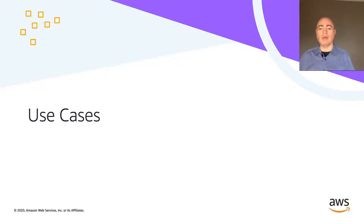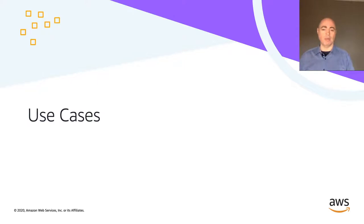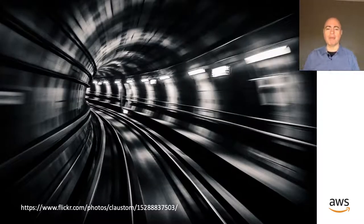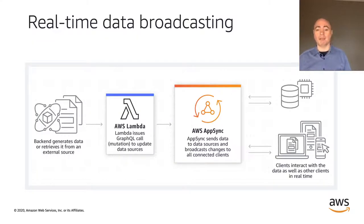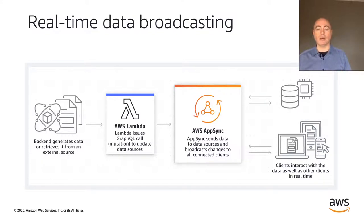Let's talk about use cases and how customers are powering their applications using AppSync at scale in production. Starting with one of my favorite use cases: real-time. Real-time technologies enable users to receive information as it happens, providing rich, engaging, and collaborative experiences. One of the most important capabilities in AppSync is built-in support for real-time data. You can use AWS AppSync to enable scalable real-time collaboration use cases by broadcasting data from the backend to all connected clients — one-to-many — or broadcasting data between clients themselves — many-to-many.